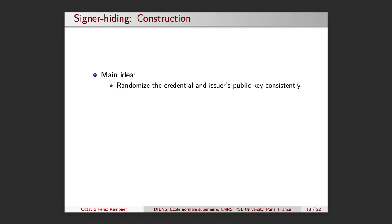We first randomize the credential and the issuer's public key consistently. Now, the updated signature on it will verify under the randomized public key. Here, it is important to stress that because of the unlinkability property, randomized public keys look like fresh public keys, which means that without knowing the randomizer, it's hard to tell whether or not two given public keys belong to the same equivalent class.